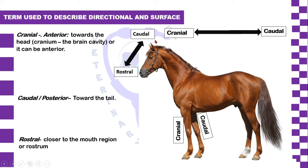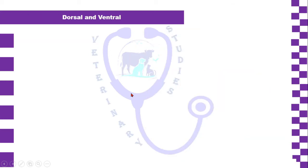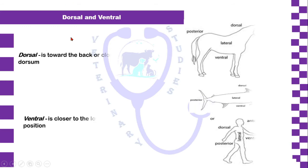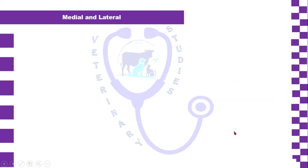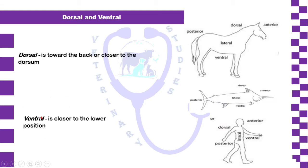Dorsal means toward the back, or closer to the dorsal part of an animal. As seen in the picture on the slide, the dorsal part of an animal is related to the vertebral column. Ventral means closer to the lower position, and the picture shows that the ventral part of an animal represents toward the breast bone or sternum.